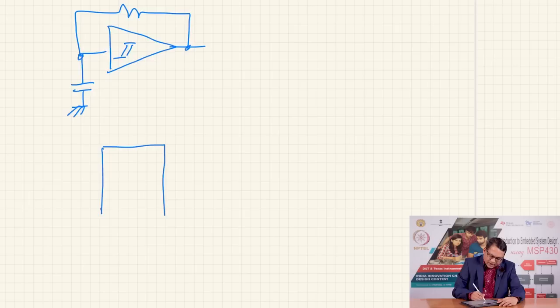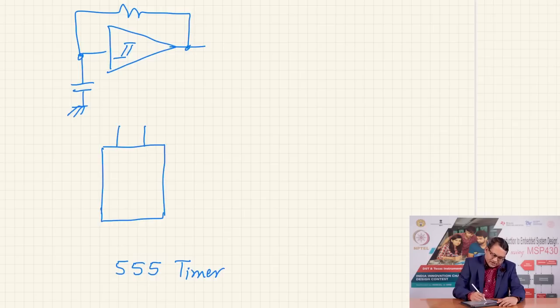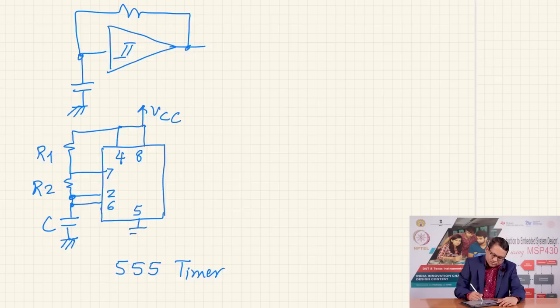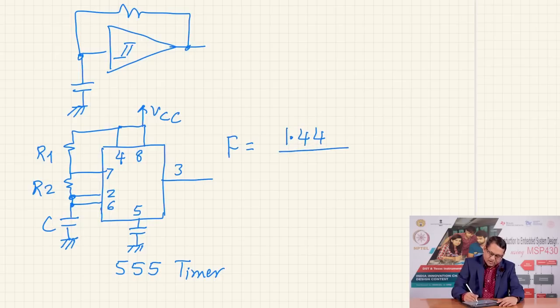Another option is to use a very popular IC called the 555 timer IC — it is an 8-pin IC. Connect pins 4 and 8 to VCC, pin 7 through resistor R1, then short pins 2 and 6 together with another resistor R2 and a capacitor to ground. Pin 5 is decoupled with a capacitor, and on pin 3 you get the output voltage. The frequency of this topology is 1.44 divided by (R1 + 2R2) × C, and you can tailor the resistor and capacitor values to get your required frequency.